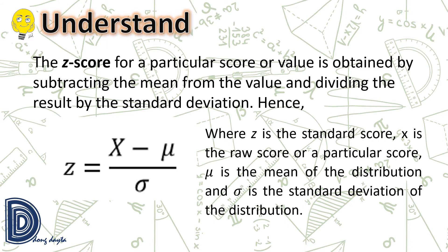In the formula, z is the standard score; x is the raw score or particular value; mu is the mean of the distribution; and sigma is the standard deviation of the distribution.